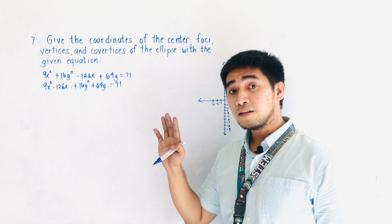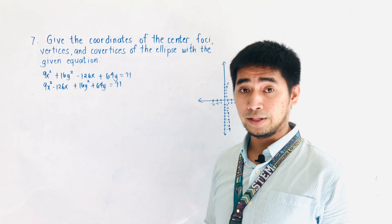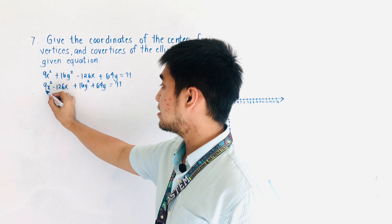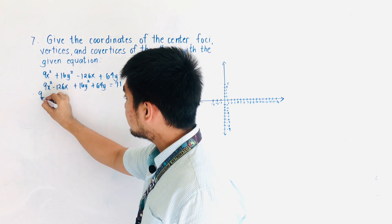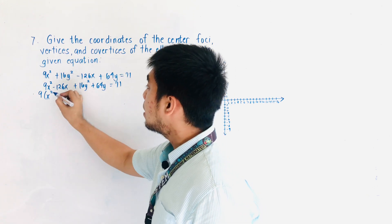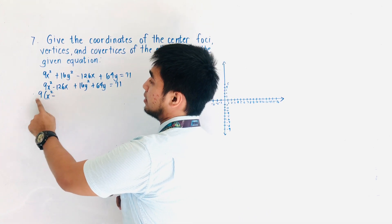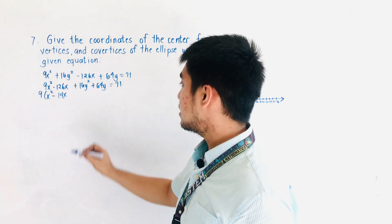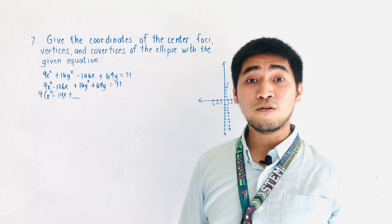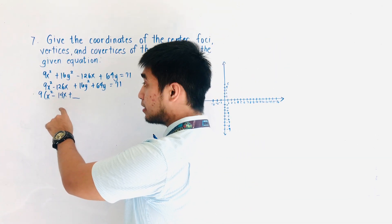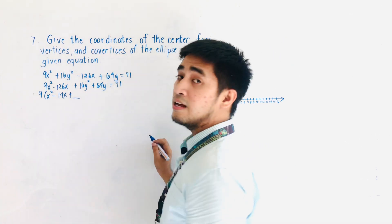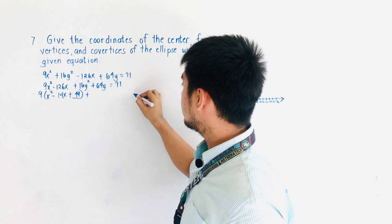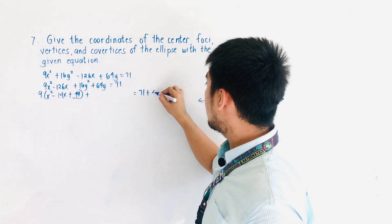The next thing we need to do is to factor out the coefficients of x² and y². For 9x², we factor out 9 and we'll have x² - 14x (since 126 ÷ 9 = 14). Now we complete the square: -14 ÷ 2 = -7, and (-7)² = 49. So the right side becomes 71 + 49.